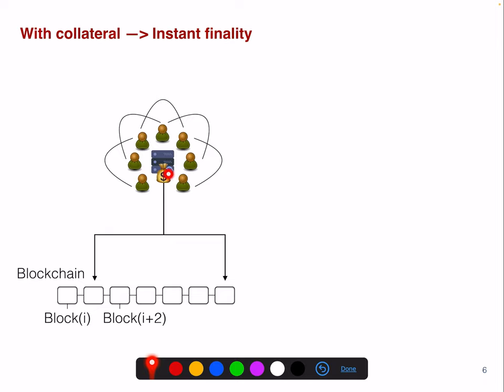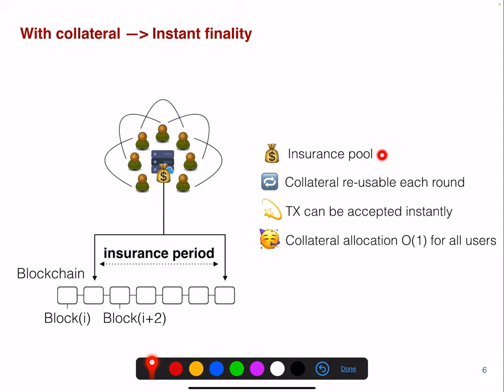If the operator provides collateral, they can ensure all transactions happening in a given period up to the amount of the collateral, providing instant finality — a kind of insurance pool. The good thing is that this collateral is reusable each round. So a transaction, if it goes only up to a particular amount, can be accepted instantly. Note, however, that this amount is specified per user, so you need to anticipate how much each user wants to receive in a particular round. It's similar to a payment channel hub, with the advantage that you don't need to refill it each round — it's automatically refilled. The collateral allocation for all users can be encoded in a single hash, for example using a Merkle tree.